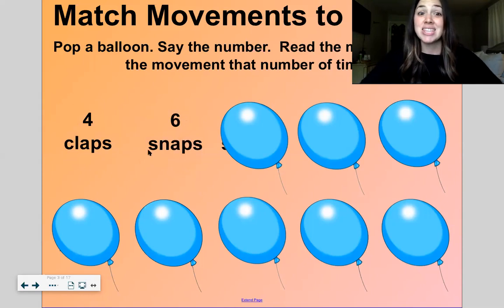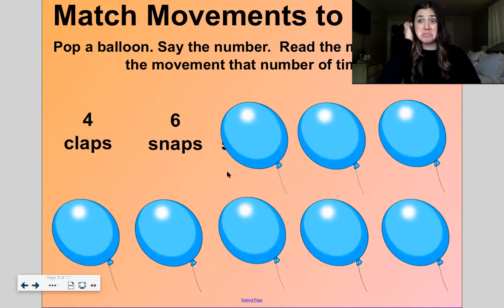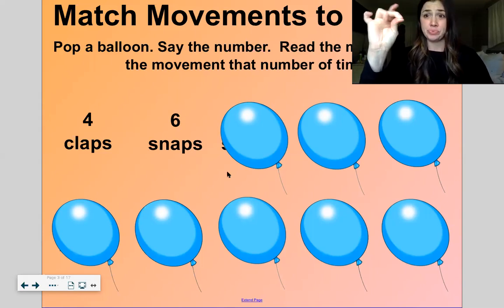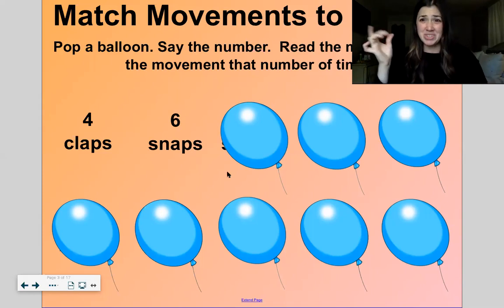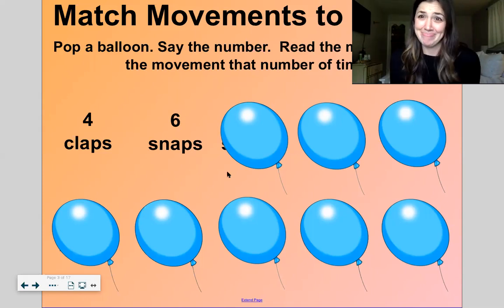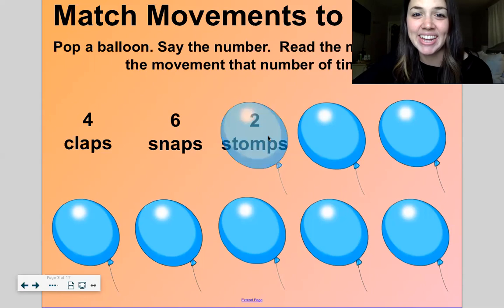Six snaps. I'm not super great at snapping, but you kind of take your finger into your thumb and you hit it against your hand. I'm going to try. You try with me. Ready? Six snaps. One, two, three, four, five, six. All right, next one.